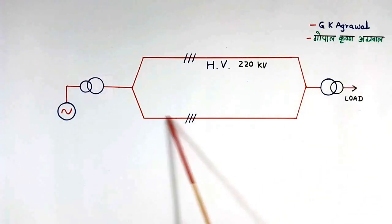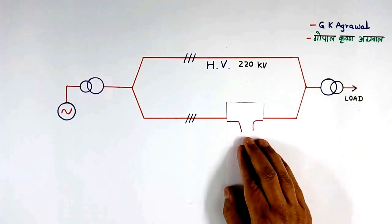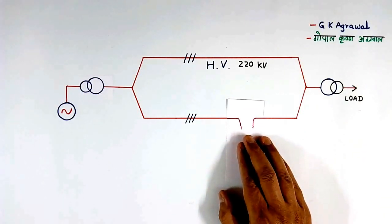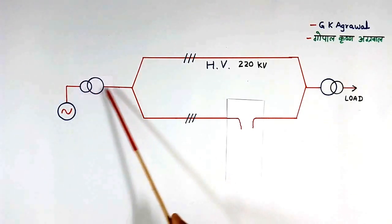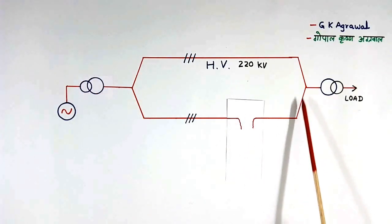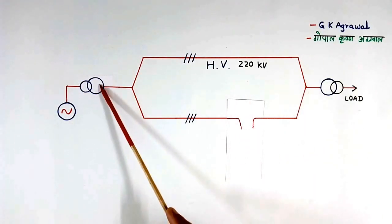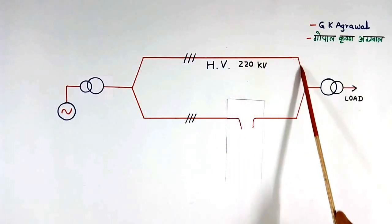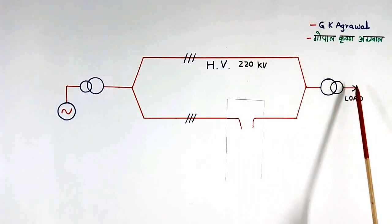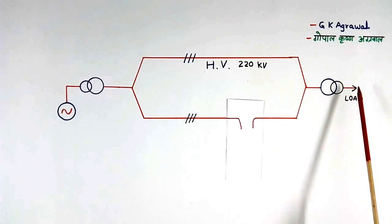Now suppose fault comes here in this line. Like this. So power cannot flow through this line. But still power will flow using this transmission line. So we will continue to get the power here.